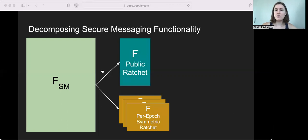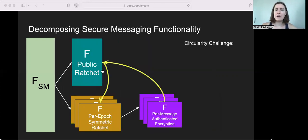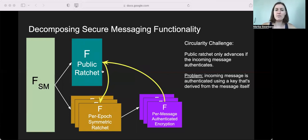So next, we can further decompose the symmetric ratchet into a per-message authenticated encryption functionality that does the encryption. And so at this point in our modeling, there's a problem of circularity that comes up. The way that the signal public ratchet works is it only advances its state if the incoming message authenticates. And the problem is that the incoming message is authenticated using a key that is derived from the message itself. So the behavior of the public ratchet depends on the message authentication and vice versa. This is a problem when decomposing signal in a modular fashion, so it requires care in our modeling.